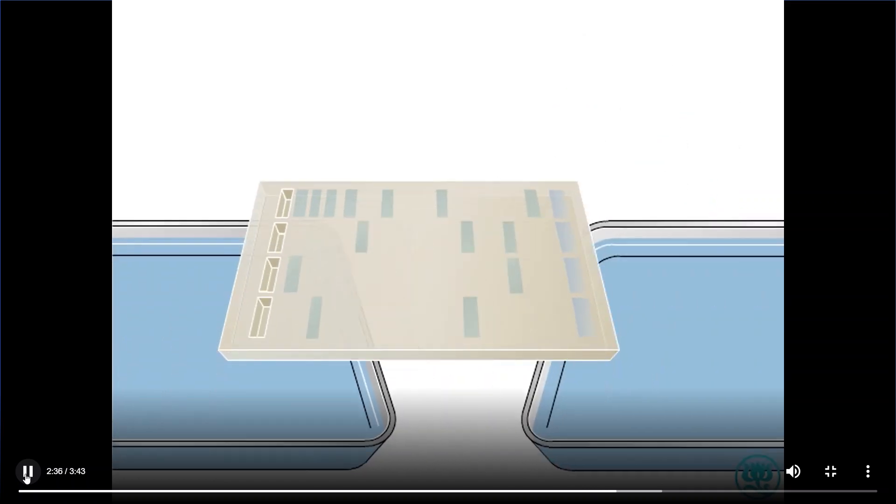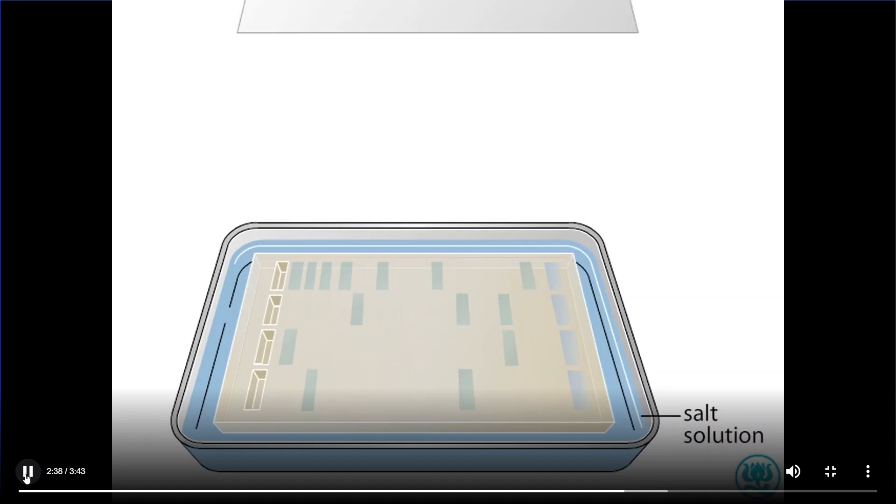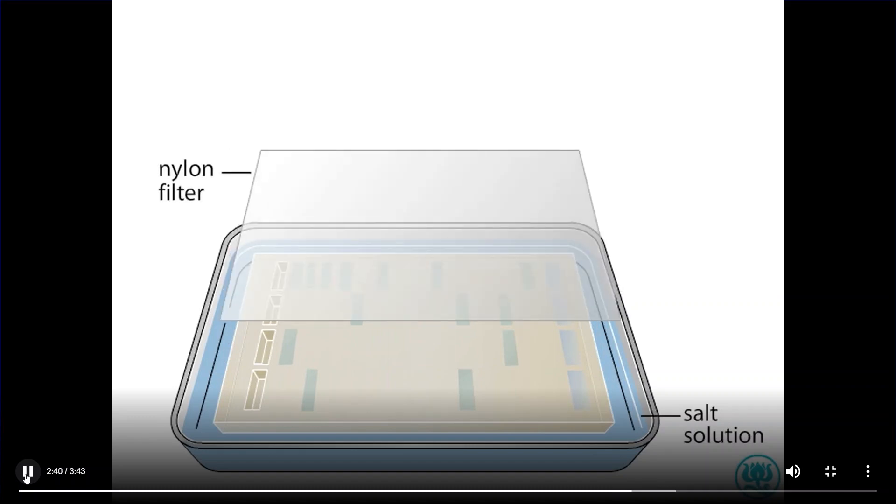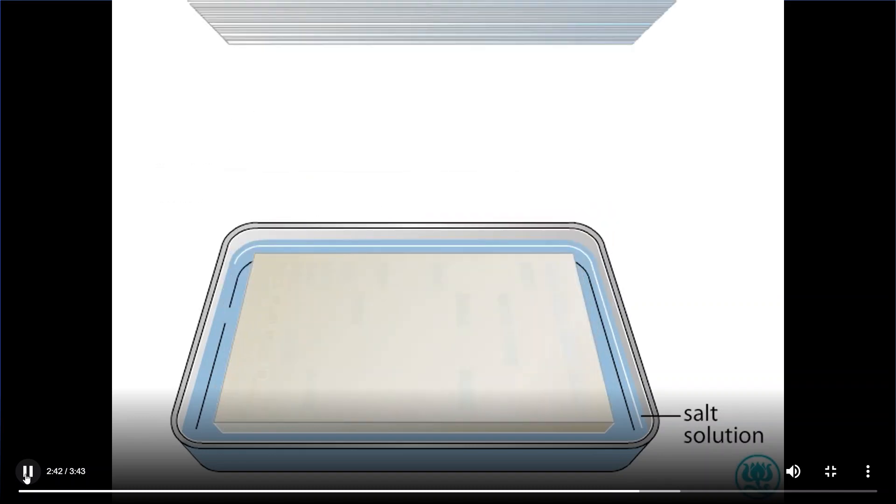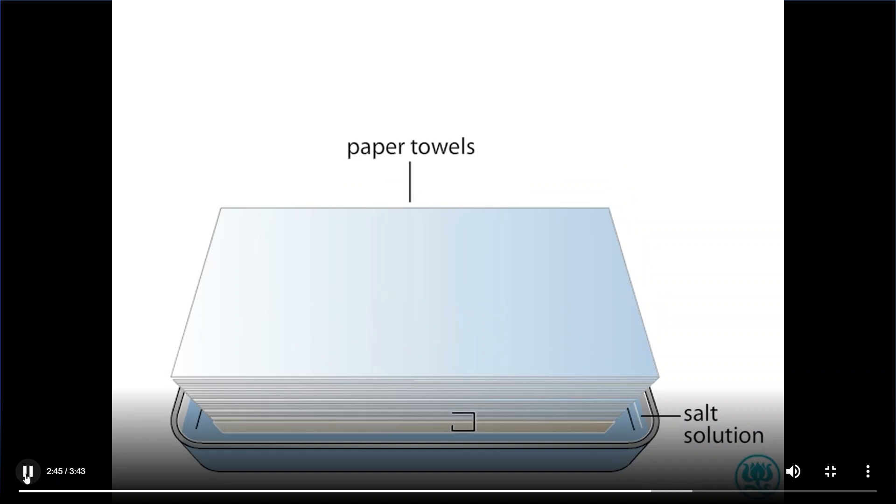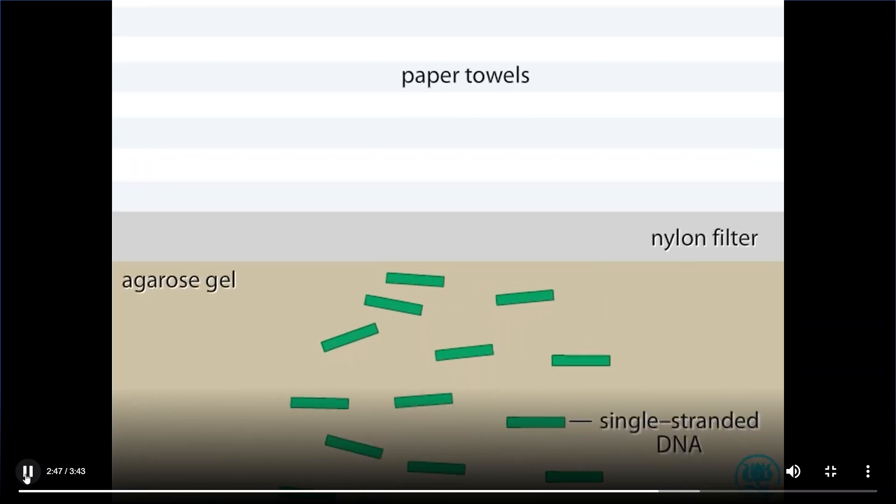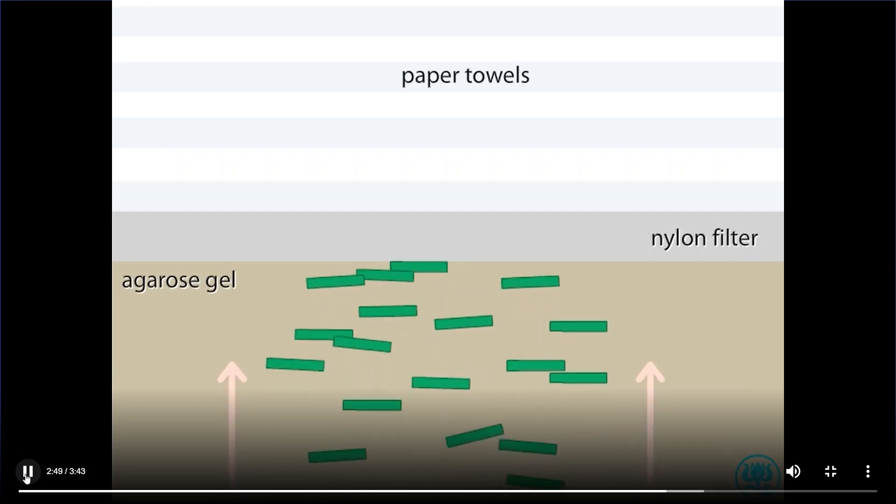The gel is then transferred to a salt solution, and a nylon filter is placed on top of the gel. Absorbent towels are placed on top of the filter. The salt solution draws the DNA through the gel toward the nylon filter, where the DNA adheres.